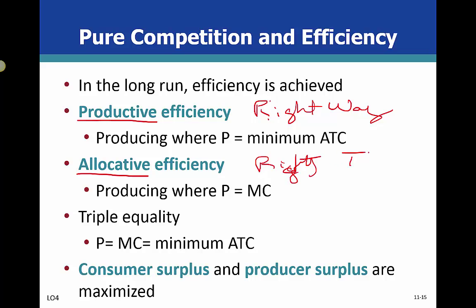We're producing the right products and services. Where we're producing it most efficiently means that price equals average total cost—that's super efficient. When we produce the right things, then our price equals marginal cost. When we hit triple equilibrium, that's a term that means we're having both productive and allocative efficiency, and that's where price equals marginal cost and also minimum average total cost. In the long run, that's where we end up.